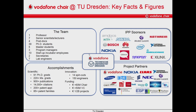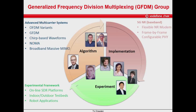Currently, 7 senior researchers and about 40 PhD students work in different research groups at the Chair. One of these groups is the Generalized Frequency Division Multiplexing group.